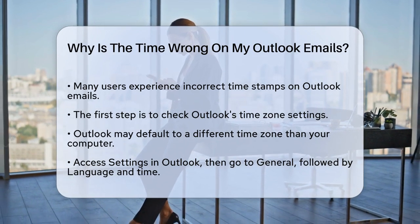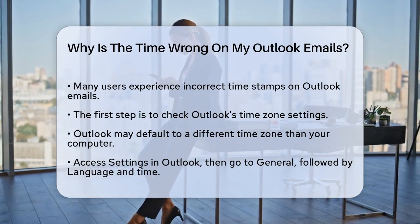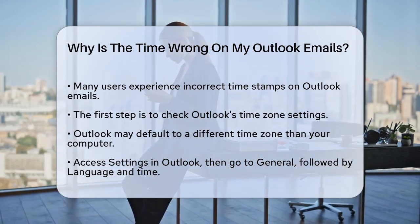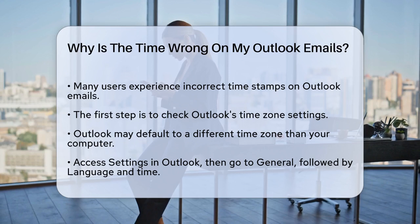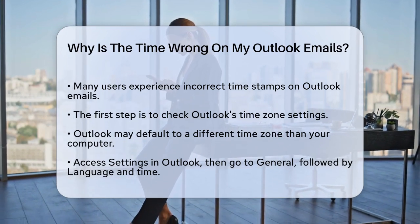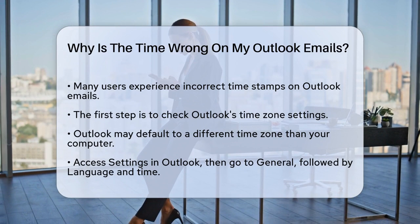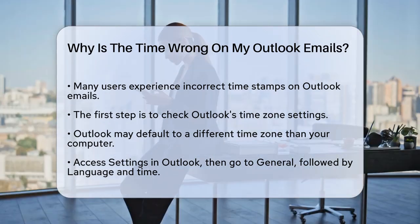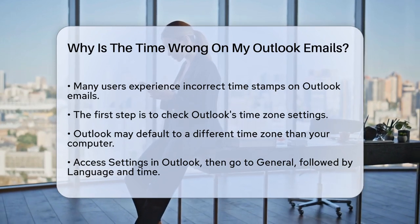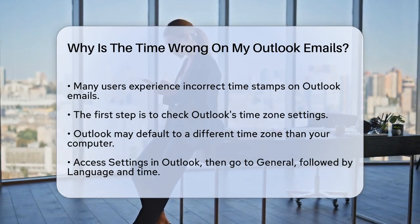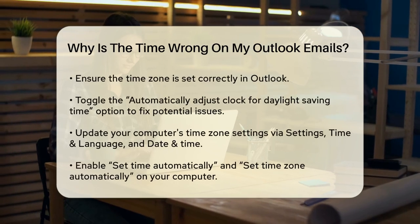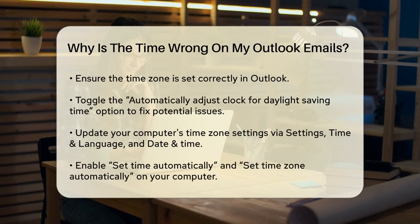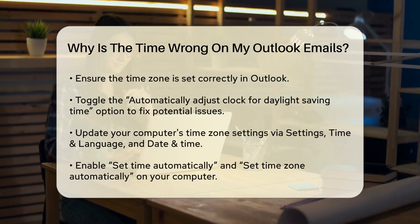First, it's essential to check your time zone settings. Sometimes Outlook can default to a time zone that's different from your system settings. For example, Outlook might be set to Pacific Standard Time (PST), even if your computer is set to a different time zone. To fix this, open Outlook and go to Settings, navigate to the General section, then select Language and Time. Here, ensure that your time zone is set correctly. If it's already correct, try toggling the Automatically Adjust Clock for Daylight Saving Time option on and off to see if that resolves the issue.